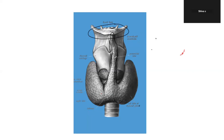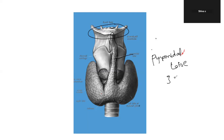There is also a pyramidal lobe, which is a variation found in approximately 30% of people. This is the pyramidal lobe extending upward from the isthmus.